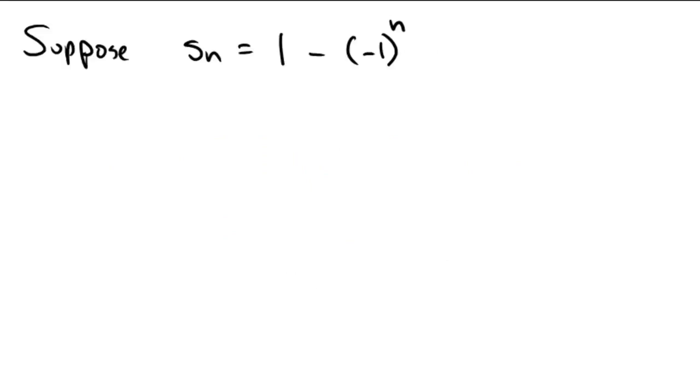So, assuming you paused the video and gave it a good shot here, what do the terms of the sequence look like? Well, Sn would be, if we plug in 1, we would get negative 1 to the first power, which is negative 1, and 1 minus negative 1 is 2.